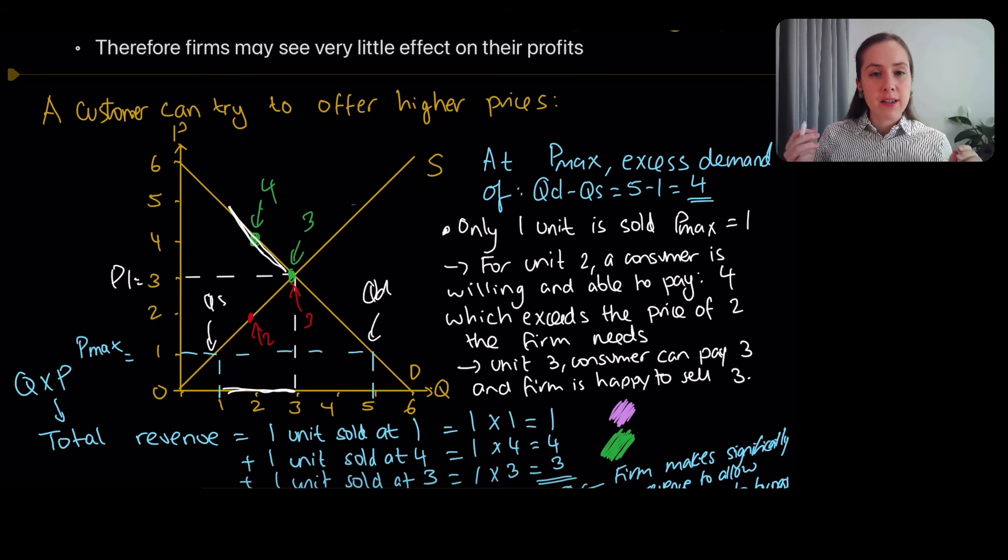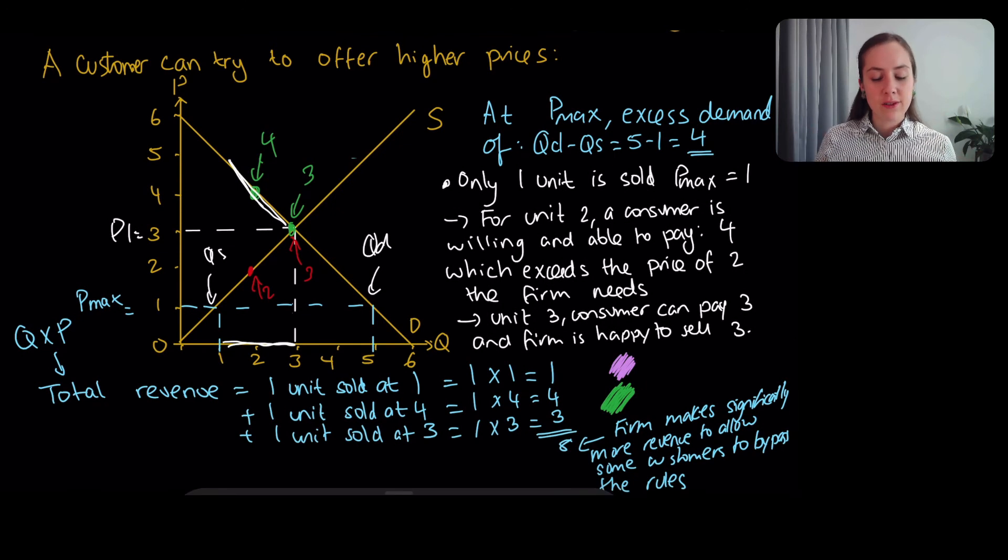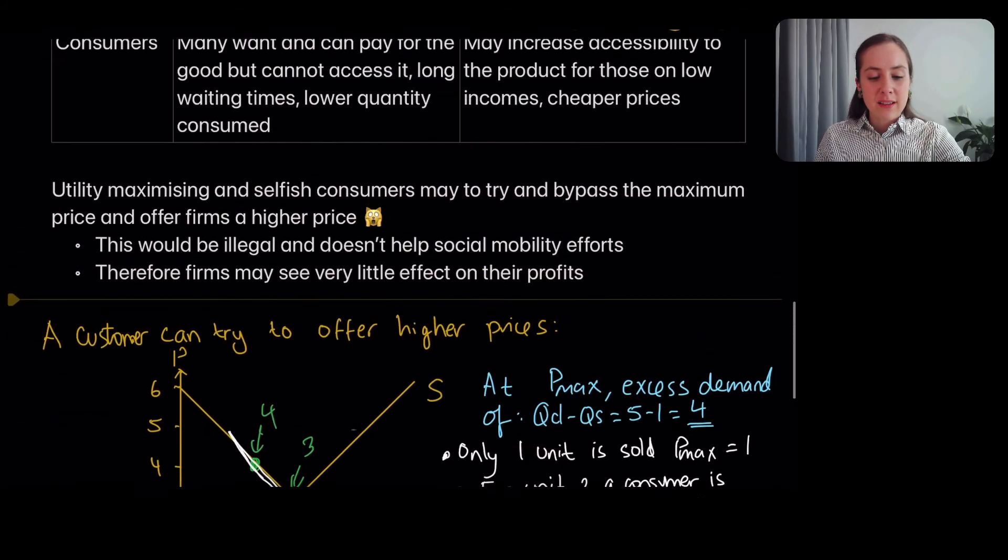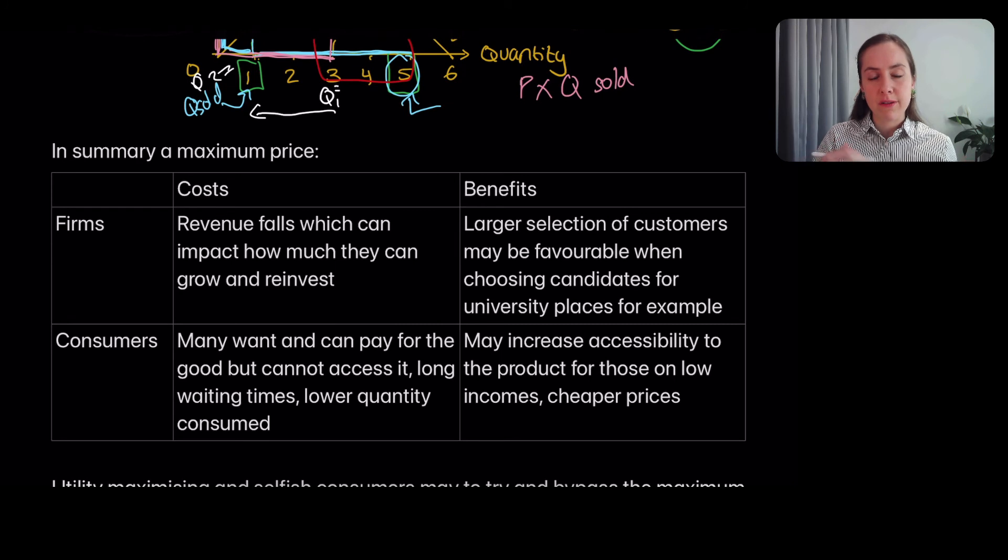But in theory, the risk of corruption could be higher as wealthier customers, or those that just can pay for it more and just want it more, perhaps start to try and access the good that they can't with the maximum price. And here I'm just doing some maths to explain that these customers that try and bid the price up illegally, they could actually make the company make even more revenue. So it could even be in the firm's interest to do this.